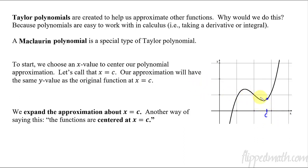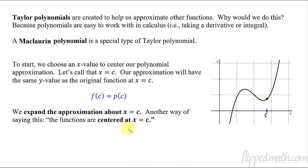Our approximation is going to have to have the same y value — that's where we're going to start off. So we have our original function evaluated at c must equal our approximation polynomial. I'm going to call it p for polynomial. The Taylor polynomial is going to have to equal the same y value. So if I plug in c, it must also equal that. Whatever my graph is going to look like, it's definitely going through that point. Now we start from here and expand to the left and to the right — that is centered at x equals c, or expanding around x equals c.